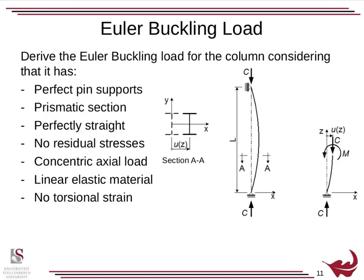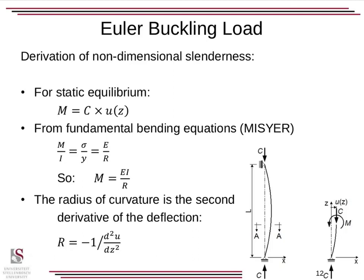Earlier I introduced the idea of the Euler or Euler buckling load, and we're going to quickly derive this. It might seem a little theoretical at first, but you will see it directly influencing our calculations. The exact form of the non-dimensional slenderness lambda comes from the elastic buckling load. To derive it, we assume a perfect column: pin supports, prismatic section, perfectly straight, no residual stresses, concentric axial load, linear elastic material, and no torsional strain. In reality, the column on site is knocked into place with a hammer, the material wasn't exactly 355 MPa, etc. — so we then convert a perfect column into an imperfect one.